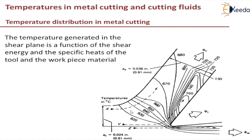Point X is moving toward the cutting tool, approaching and passing through the primary deformation zone. It is heated until it leaves the primary deformation zone — that is, while it crosses this zone the X particle keeps getting heated because shearing is happening there, which is where the heat is being generated.